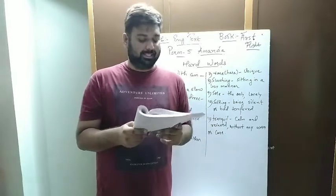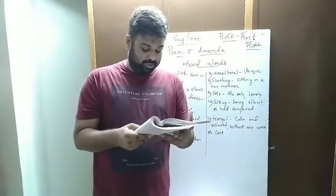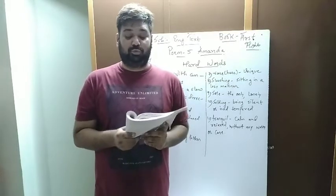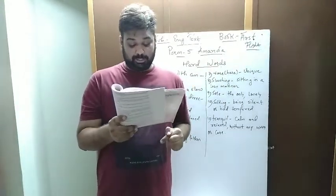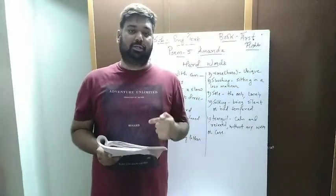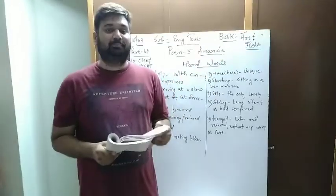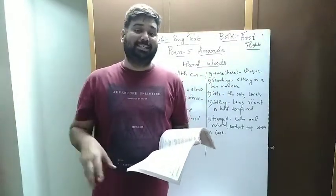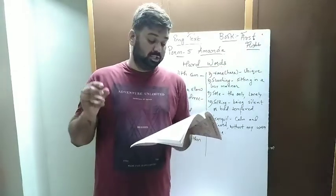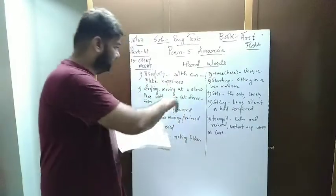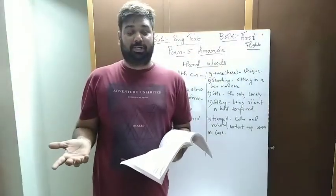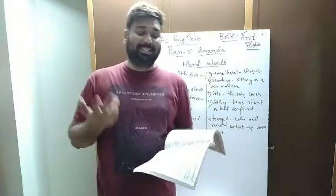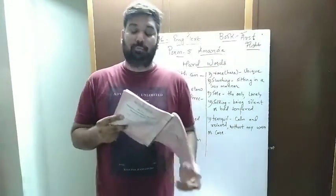'Stop that slouching and sit up straight' — this line has two figures of speech: alliteration and antithesis. It is alliteration because the sound 's' is repeated. It is antithesis because the line contains two opposite words in the same line — 'slouching,' meaning sitting in a lazy manner, and 'sit up straight.' Those are opposite words, which is why the figure of speech is antithesis.